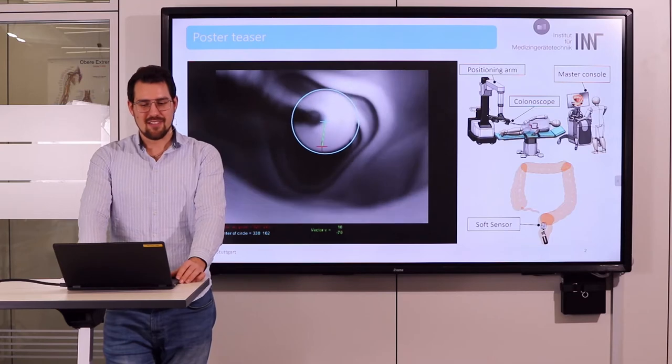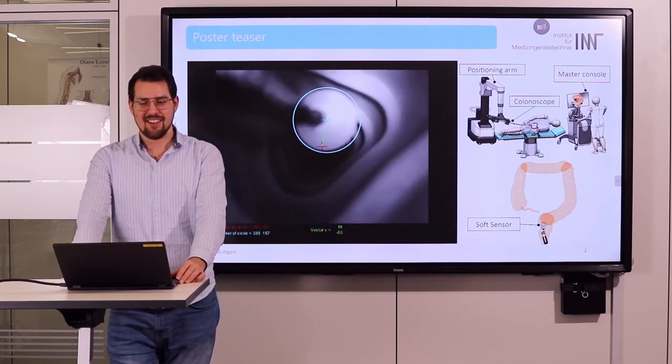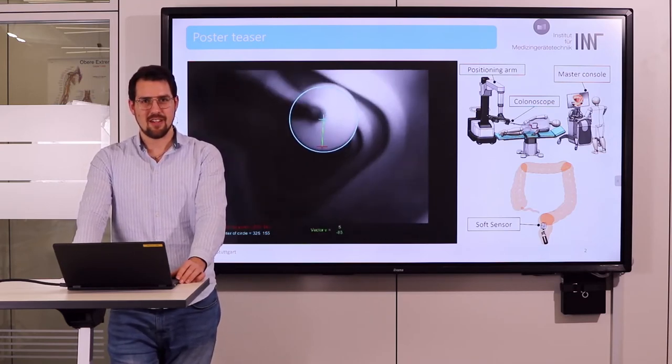The sensor, a balloon, is inserted to the working channel of the endoscope and placed in the intestine lumen in front of the endoscope's head.